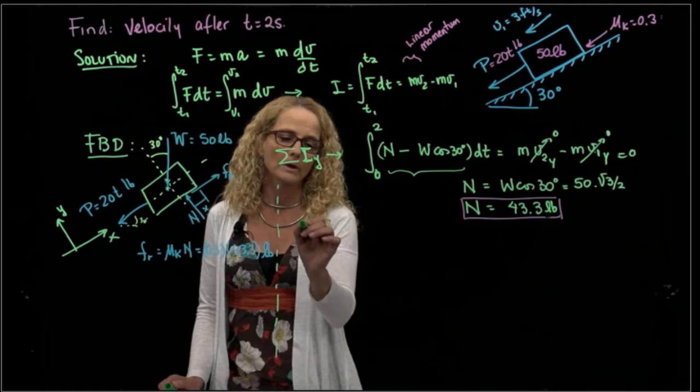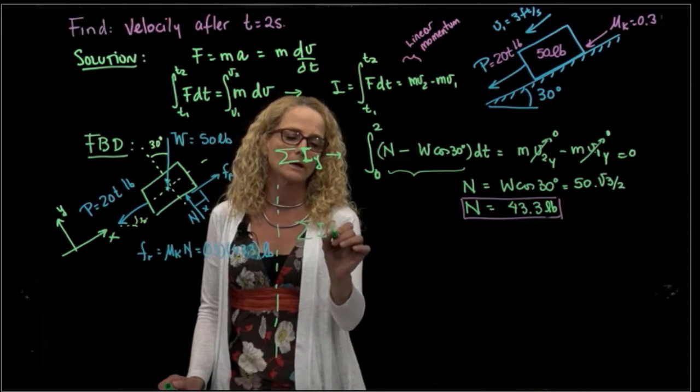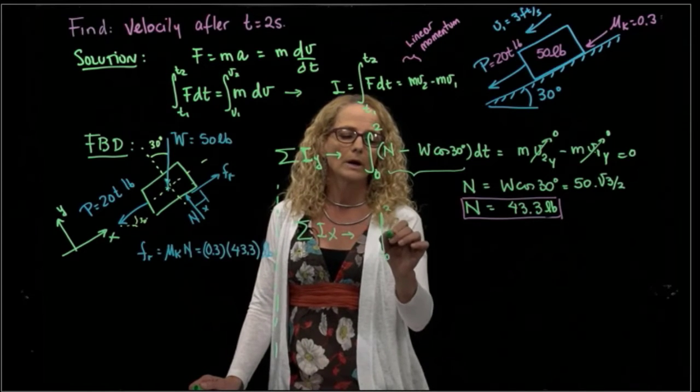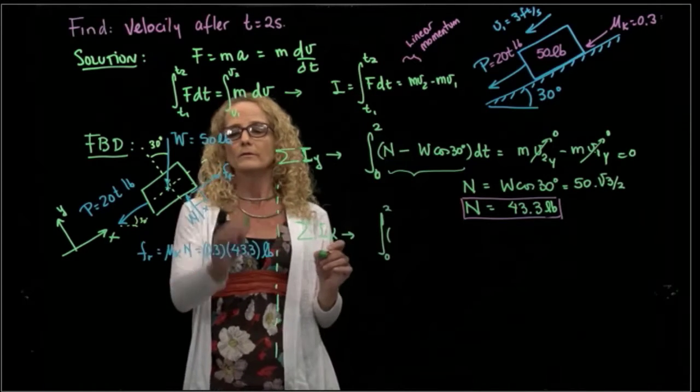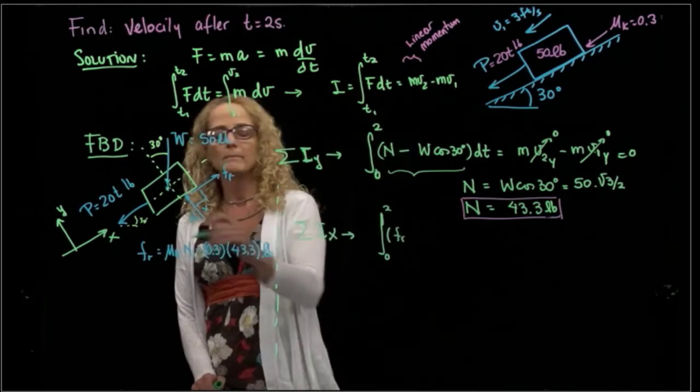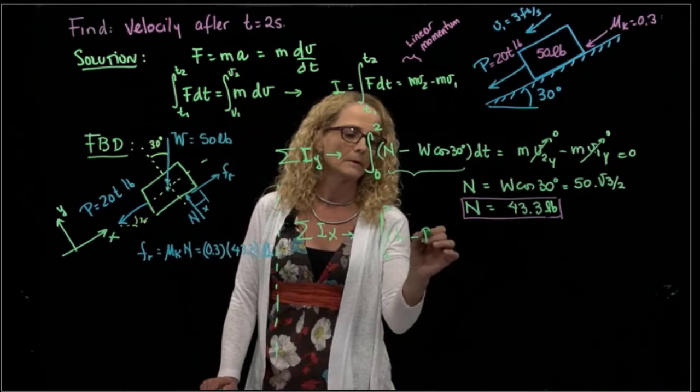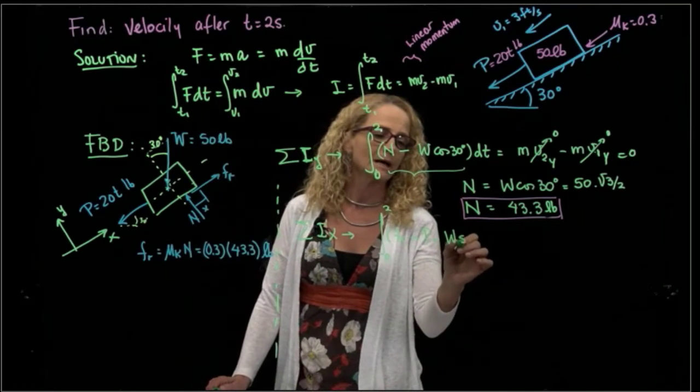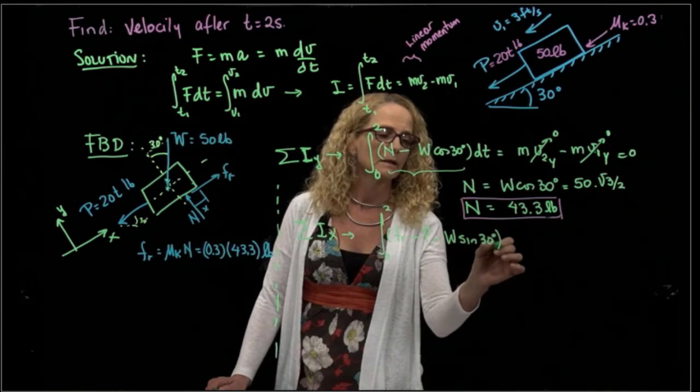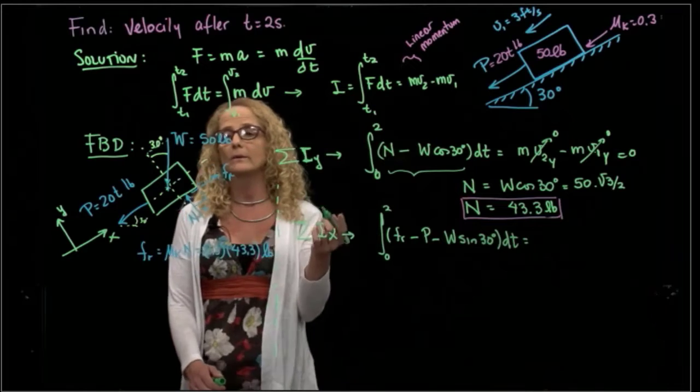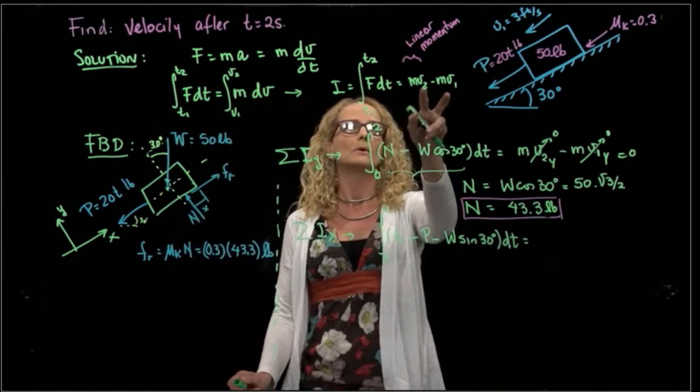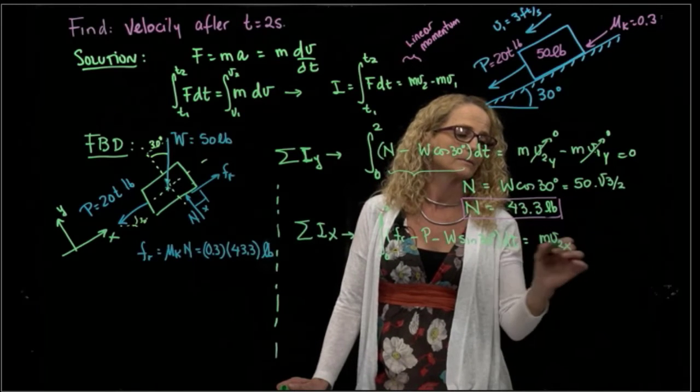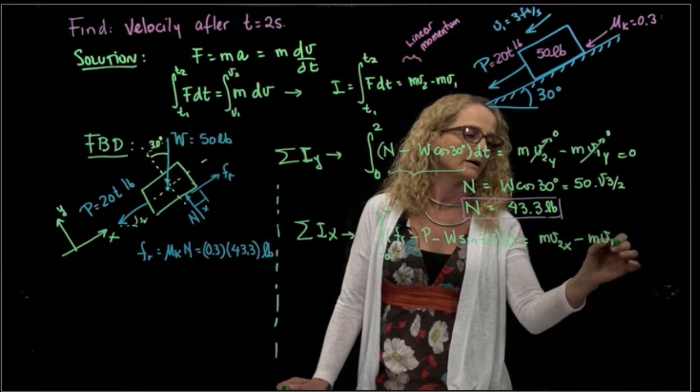So I will add my impulse in the X direction, and I have all the forces that are applied in the X direction. So from 0 to 2, I have the friction force minus my force P minus the component of the weight, which will be weight sine of 30 degrees, that over time. And that will be equal to the difference in linear momentum. So that will be MV2X minus MV1X.